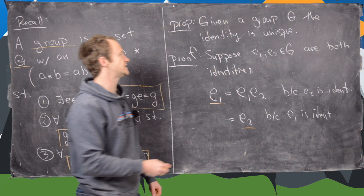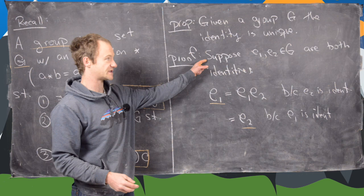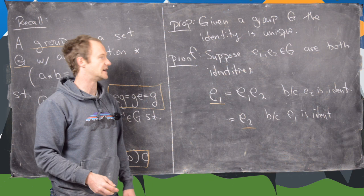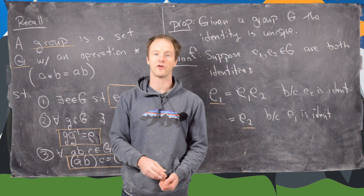So what we've done is shown that E1 is equal to E2. In other words, there is only one identity. So we suppose there might be more than one and we showed that those had to be equal. So there's only one identity in a group. Okay, great.